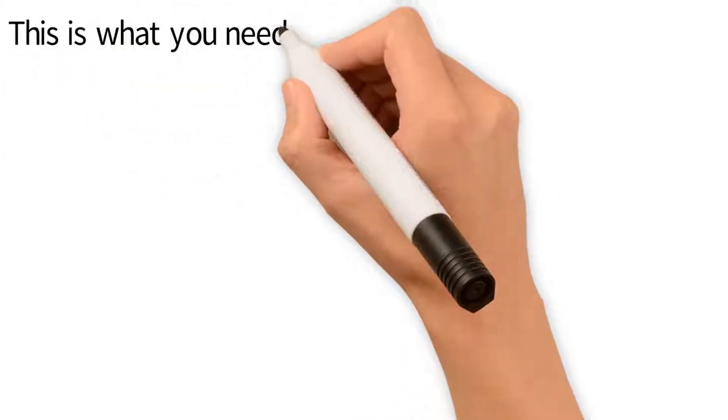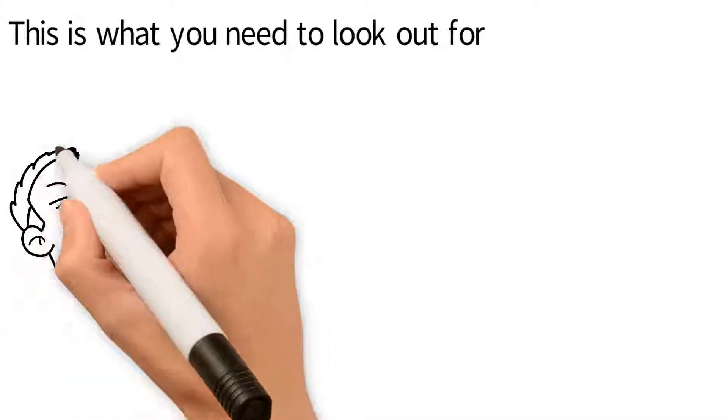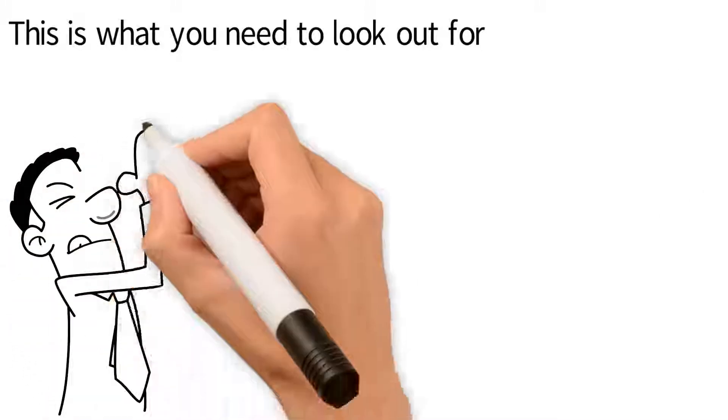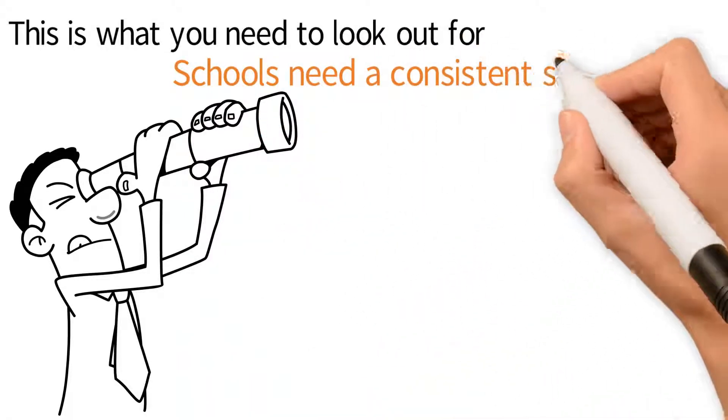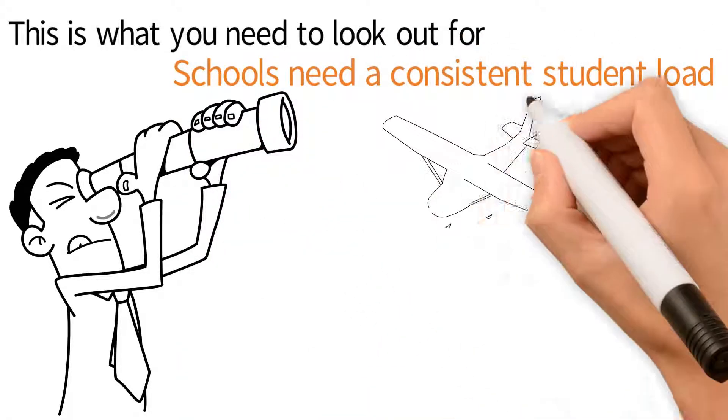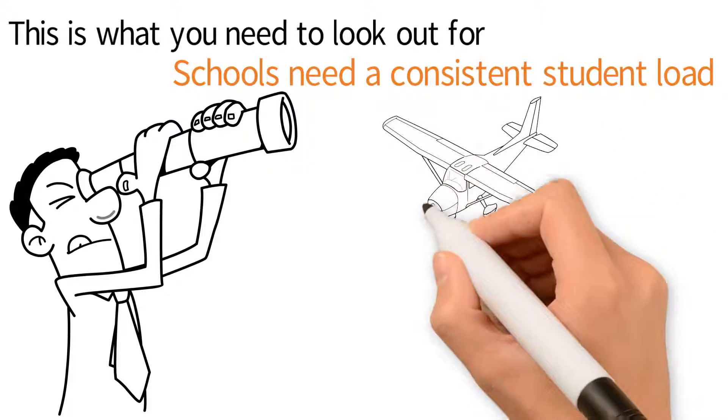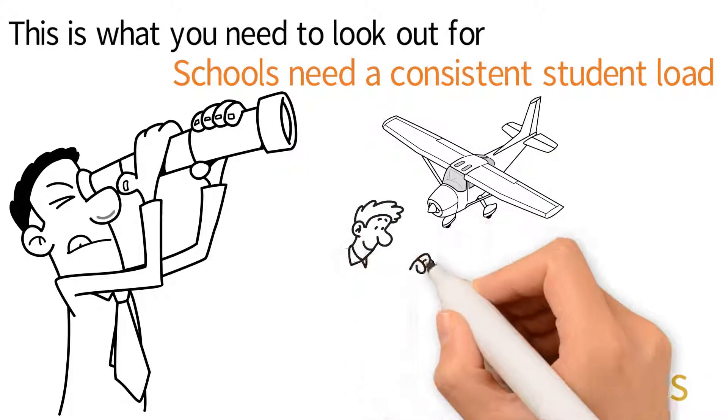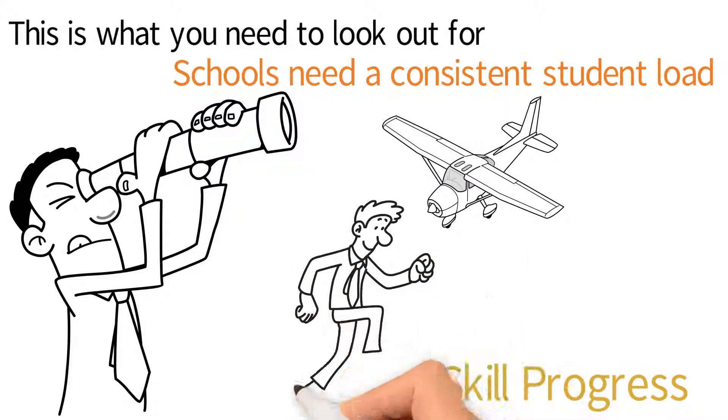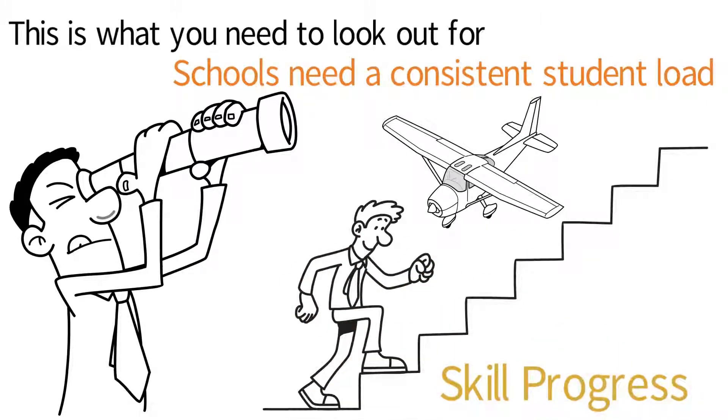This is what you need to look out for. Schools need to have a consistent student load in order to guarantee you the best possible training environment. This will result in consistent flying for you, a minimum amount of cancellations, and consistent progress in your skills without the need to review things over and over again. A consistent student load is critical.